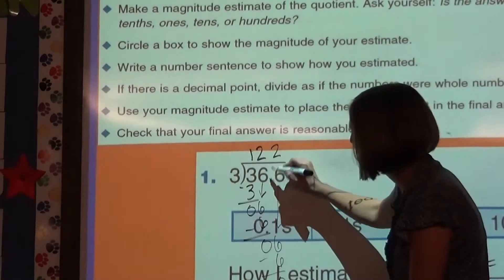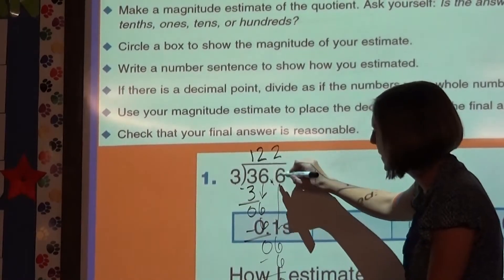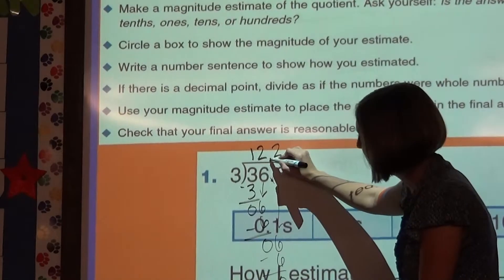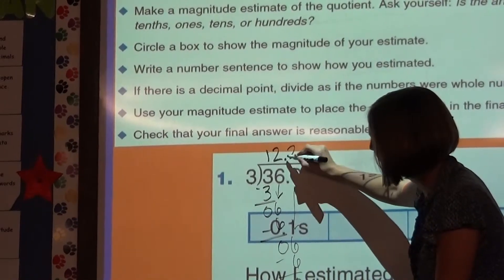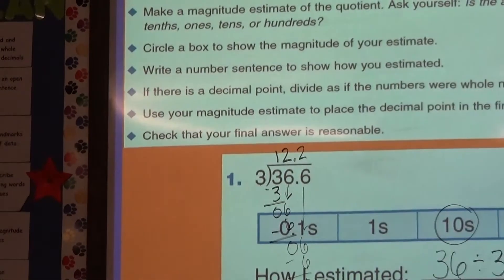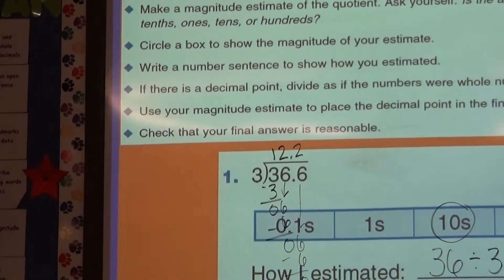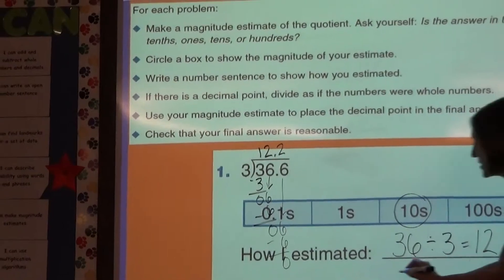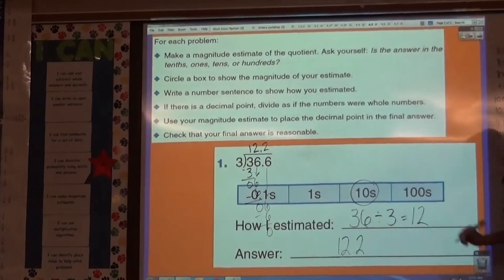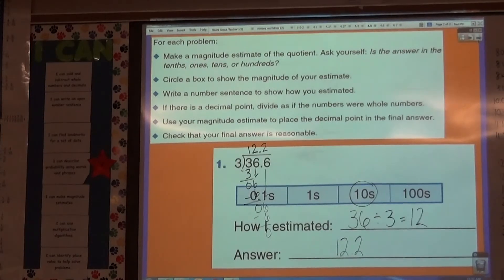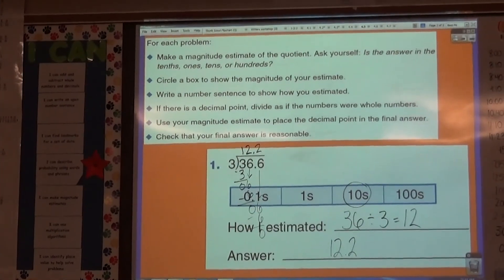Now I have to put my decimal point back in. You see how I lined up my numbers in my answer with my problem. I'm just going to take that decimal point and bring it straight up. And if I do that, I can find out that my answer is reasonable, because 12.2 is very close to 12.